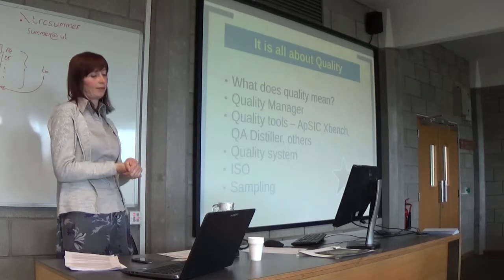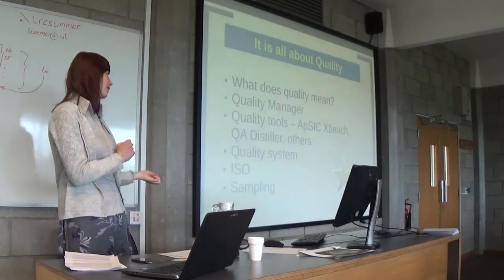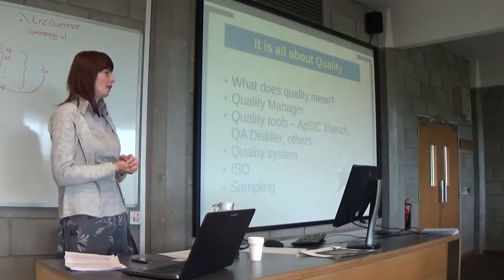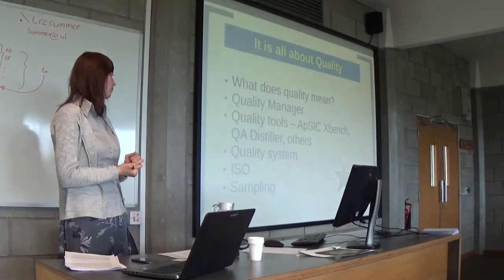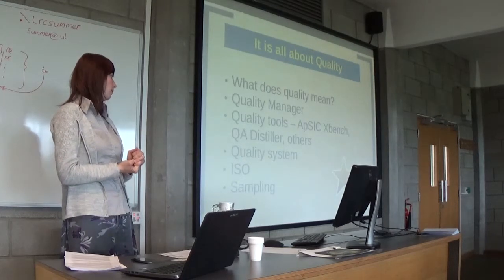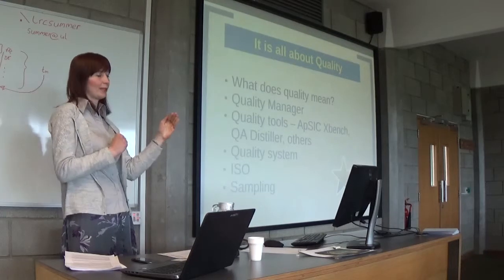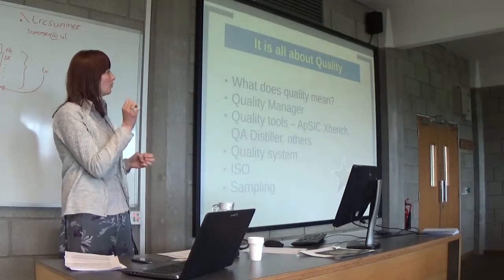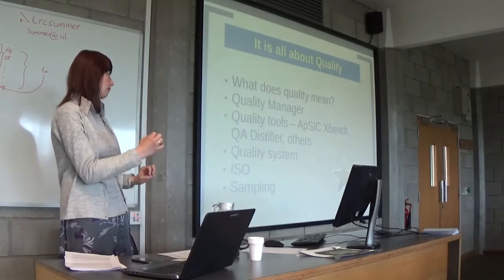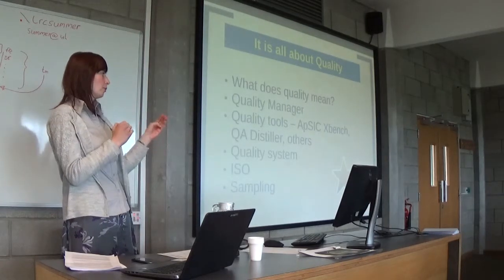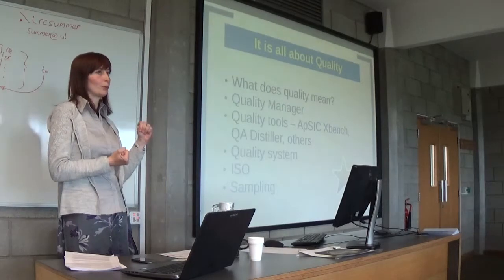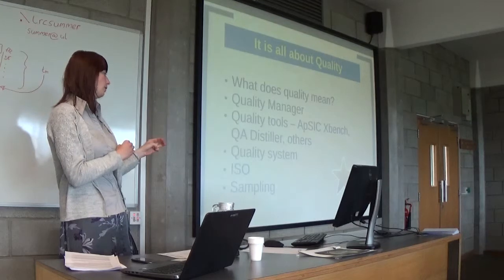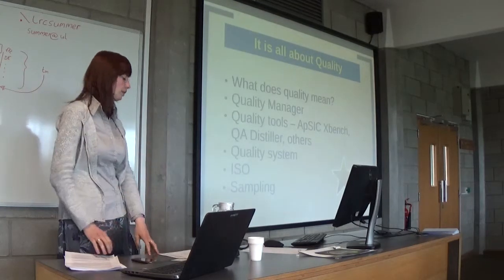As part of the quality system, companies pick a sample of text from projects and check that small part rather than the whole document, because checking everything would take too much time. However, you could be asked to correct many things not only in the sample but across the whole project based on that little sample. For example, if the company notices you used wrong terminology, you would be asked to change it throughout the entire project, not only in the checked portion.